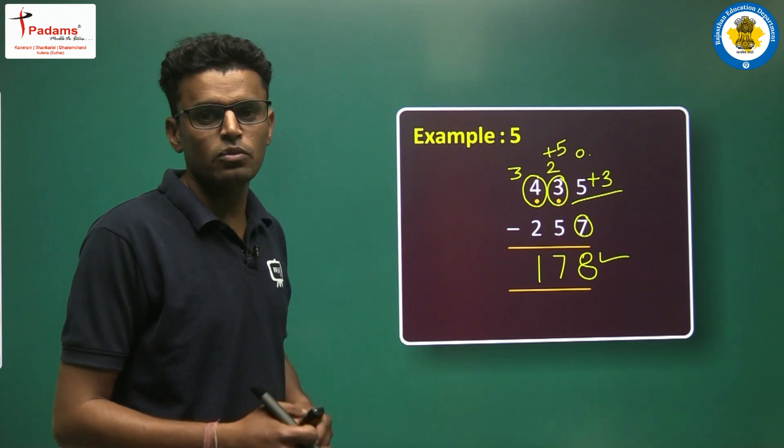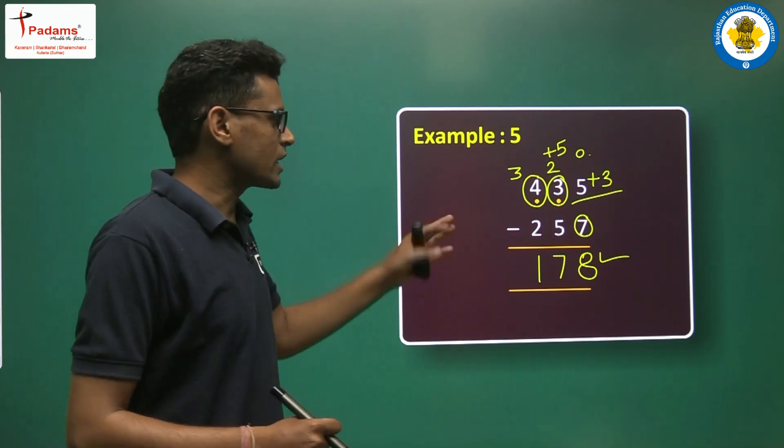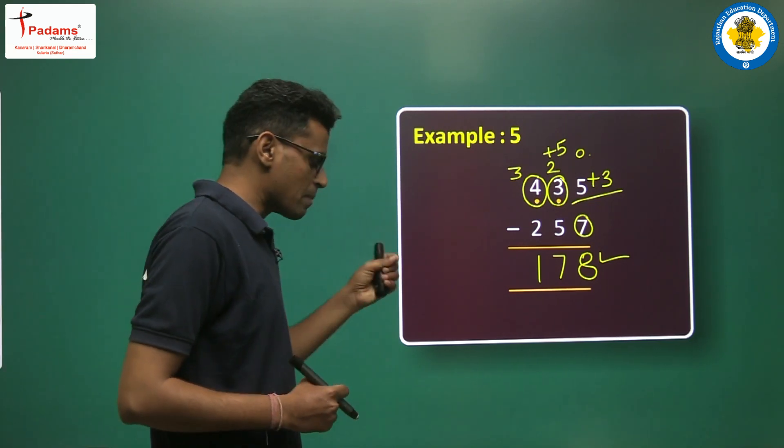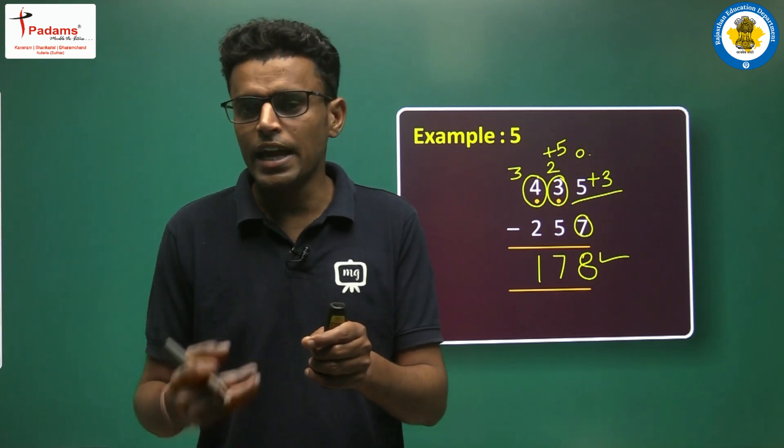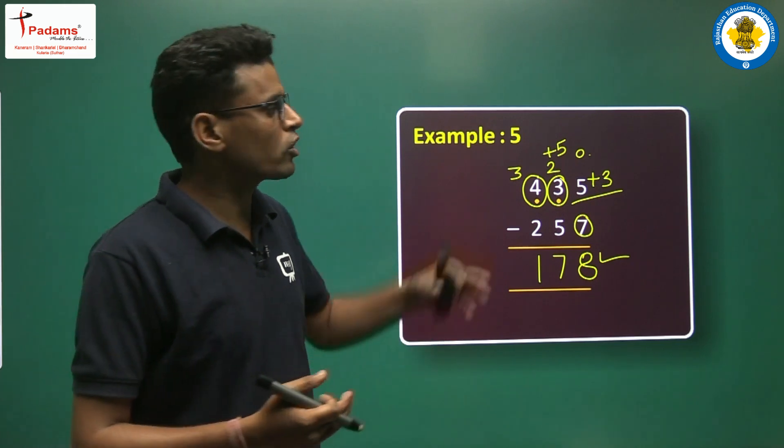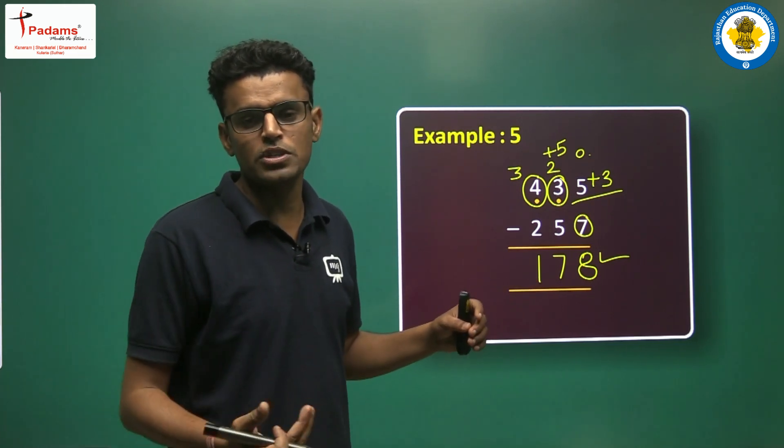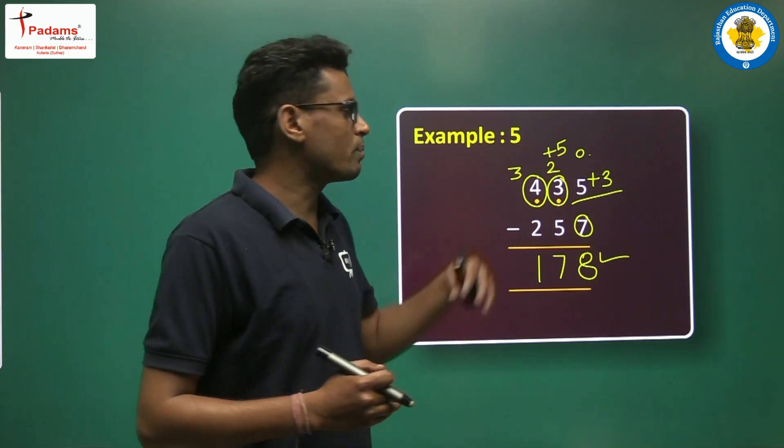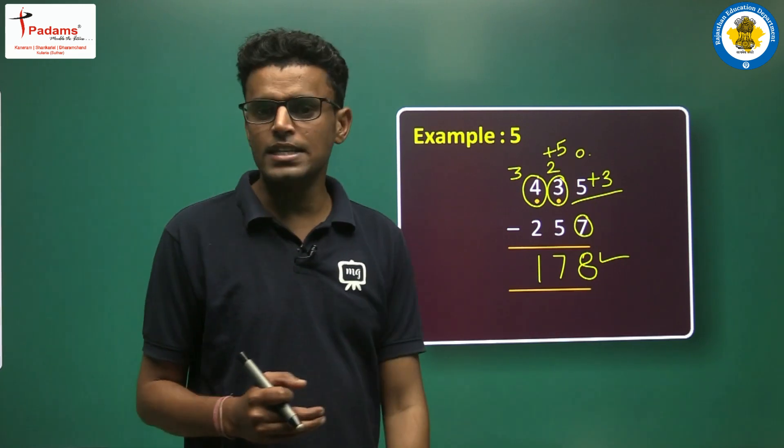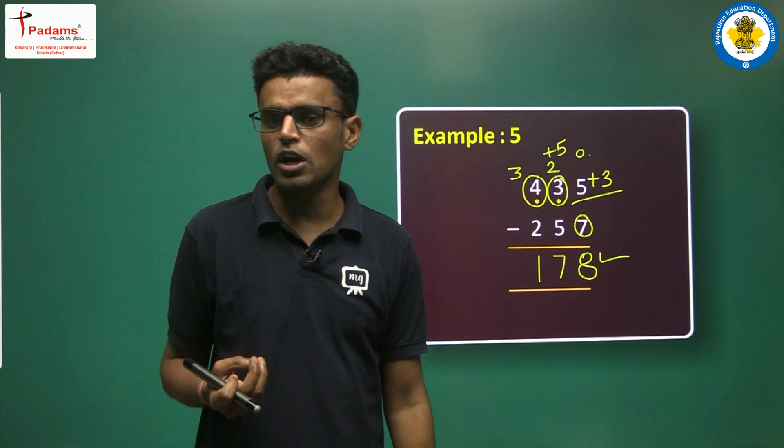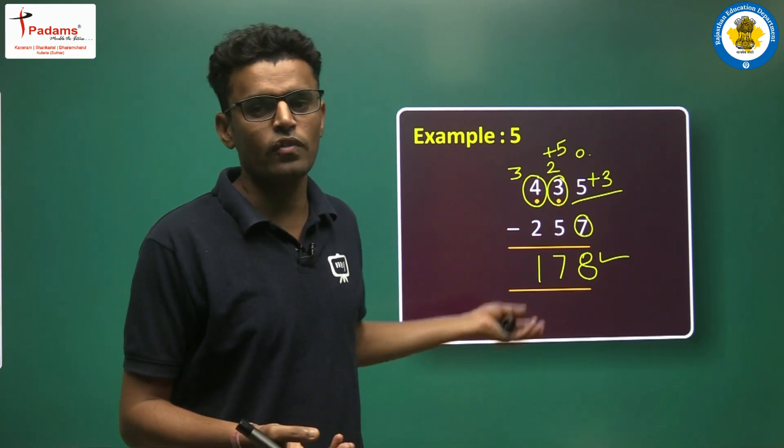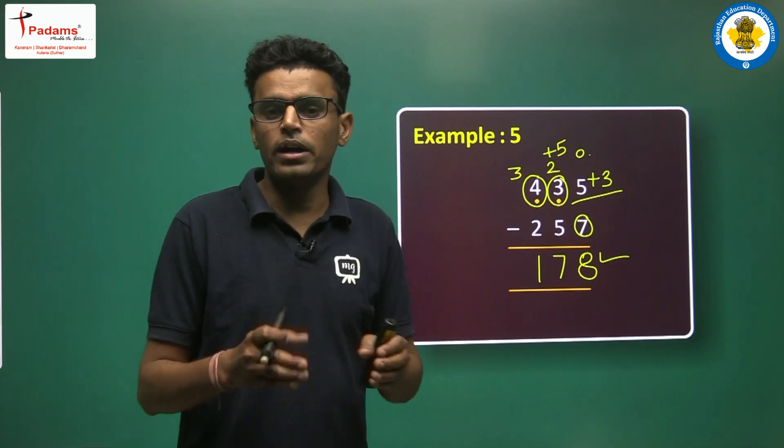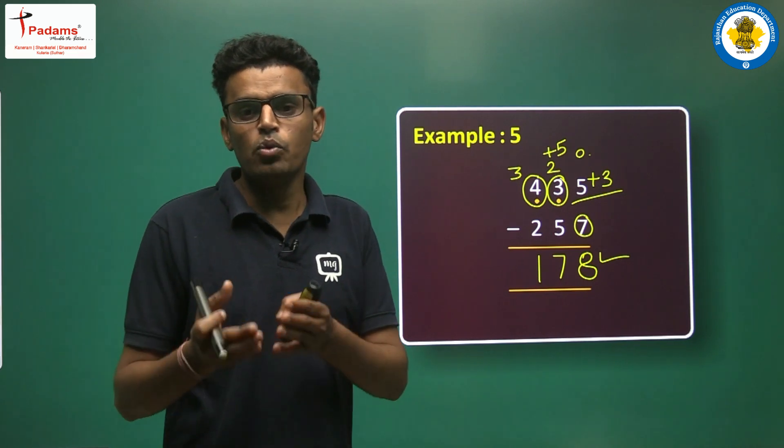We understand here is the subtraction procedure. Here is the final number. We can easily do the subtraction with the use of finding the paramitra ankh of the bigger digit in subtraction.